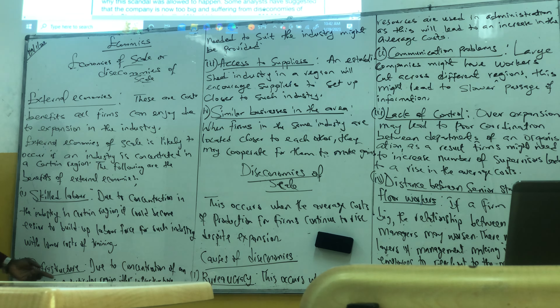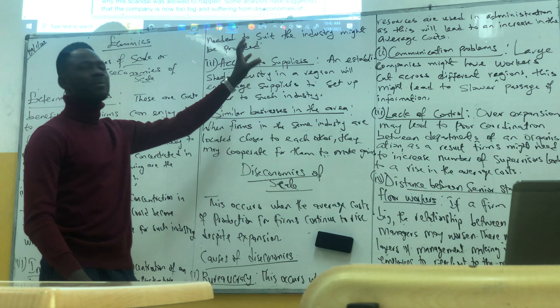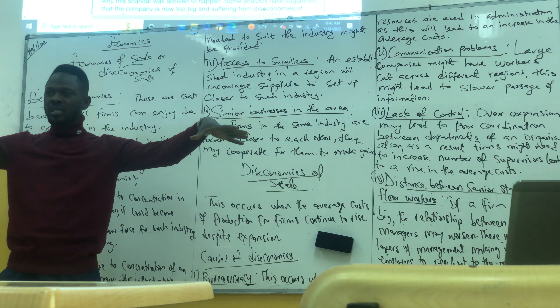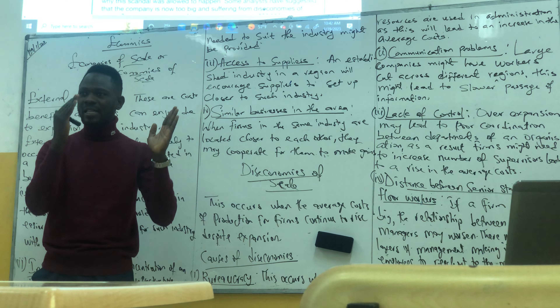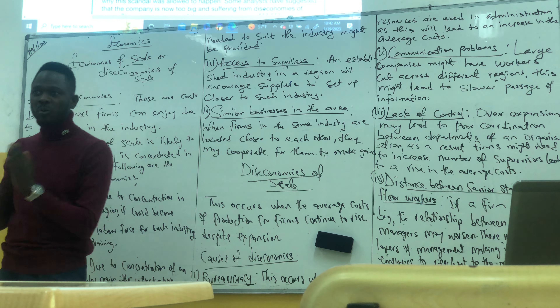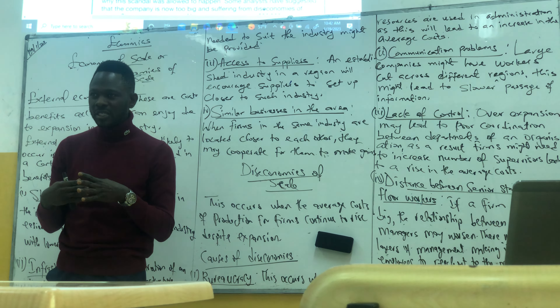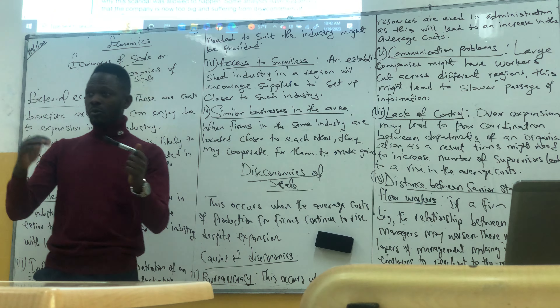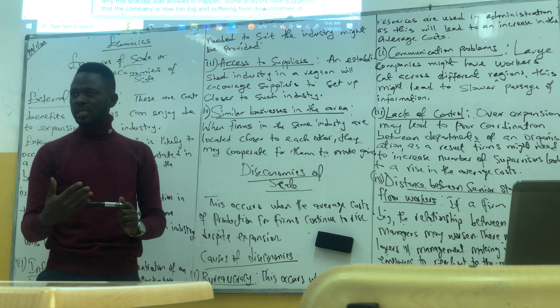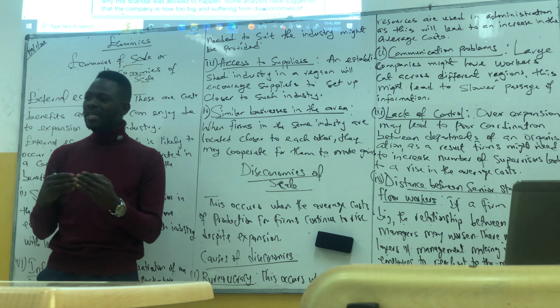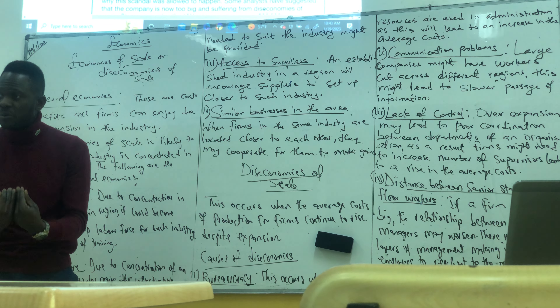Number two: infrastructure. Due to concentration of an industry in a particular region, infrastructure to suit the industry might be provided. Because schools are concentrated in Tripoli, the government might ensure there's a good road network, electricity, bridges, and traffic police always available within that region. And because all the schools are in Siraj, it might lead to good security in Siraj, which means schools will not be paying for security anymore, and as a result, the average cost of production will fall.